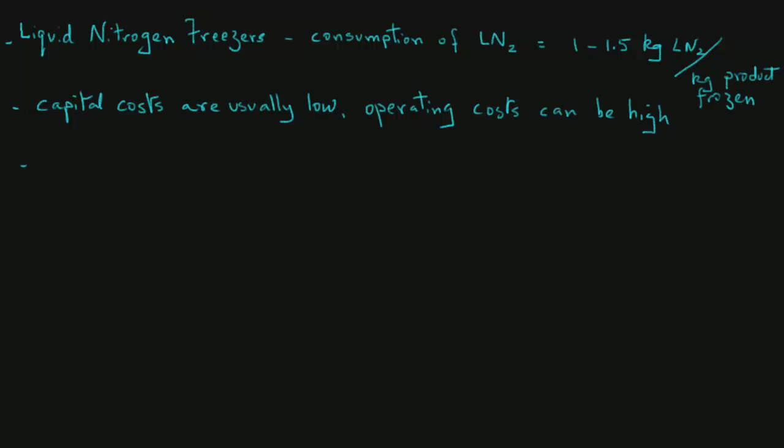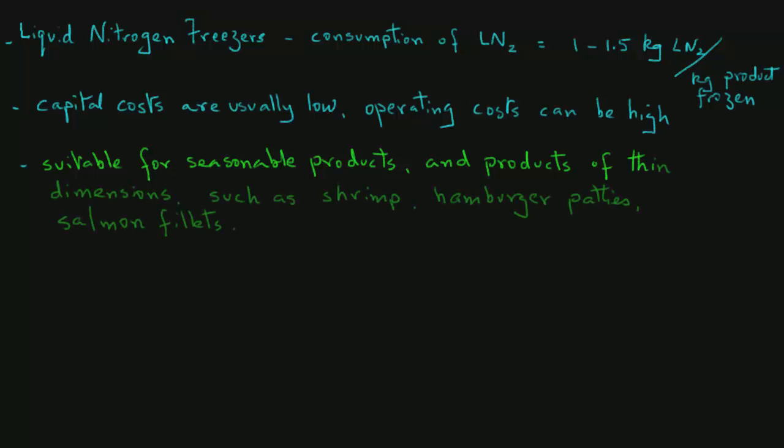It is common for highly seasonal products or products that are of fairly small size, such as shrimp. Liquid nitrogen freezing can be economical.